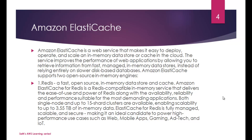Moving on to the next offering: Amazon ElastiCache. Amazon ElastiCache is a web service that makes it easy to deploy, operate, and scale an in-memory data store or cache in the cloud. It improves the performance of web applications by allowing you to retrieve information from a fast, managed in-memory data store instead of relying entirely on slower disk-based databases.